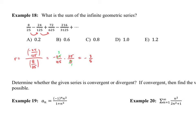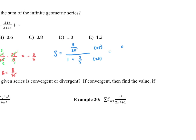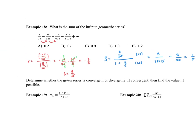Eight goes into 24 three times; 25 simplifies with 5. So r equals negative three fifths, which means it converges. The a value is the first term, eight over 25. The sum is a over one minus r: eight over 25 divided by one plus three fifths. Multiplying by 25 to clear fractions gives eight over 25 plus 15, but simplifying we get one fifth, which is option A.